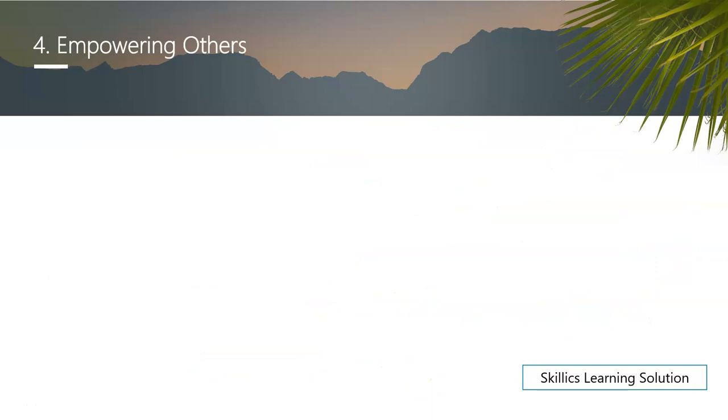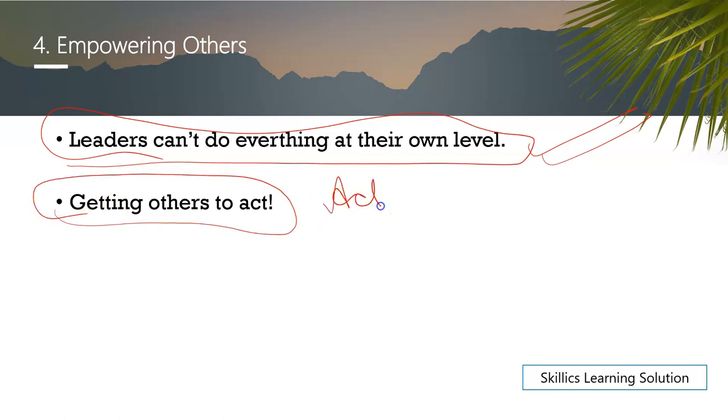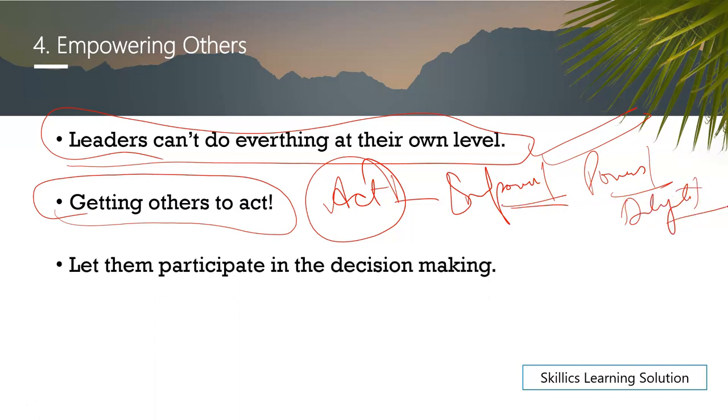The fourth one was called empowering others. What is empowering others? Leaders can't do everything at their own level. Leaders can't do all the work. Obviously, you need a team, you need people. So what do you need to do? Get others to act. They need to act. How do they act? When you empower them. Empowering them means give them some powers, give them some work, delegate some work. So that some decisions can also be made by them. Let them participate in the decision making.